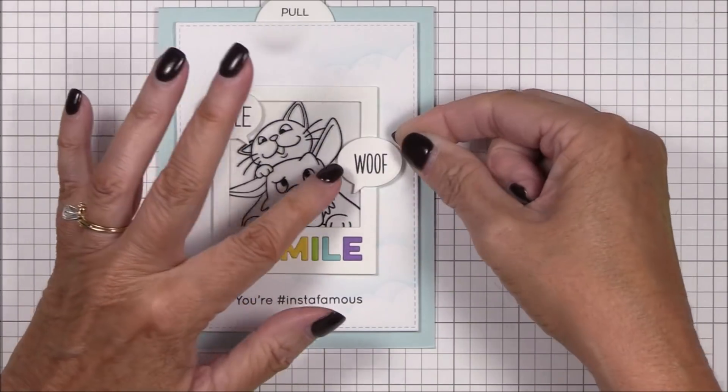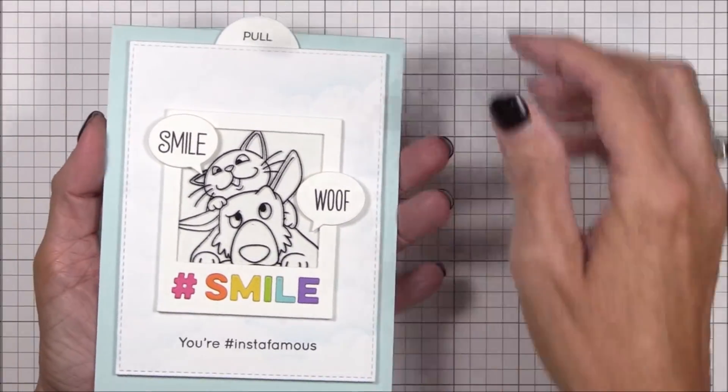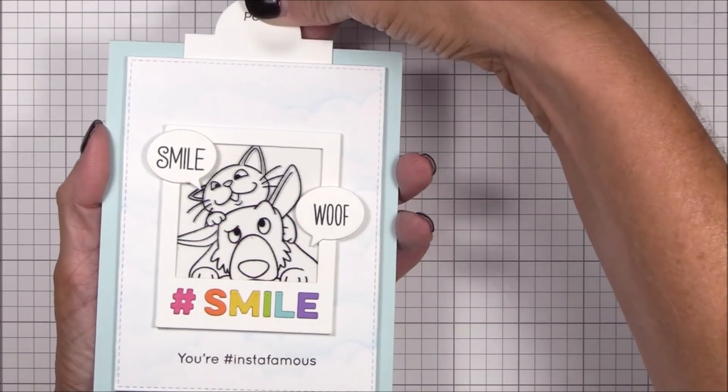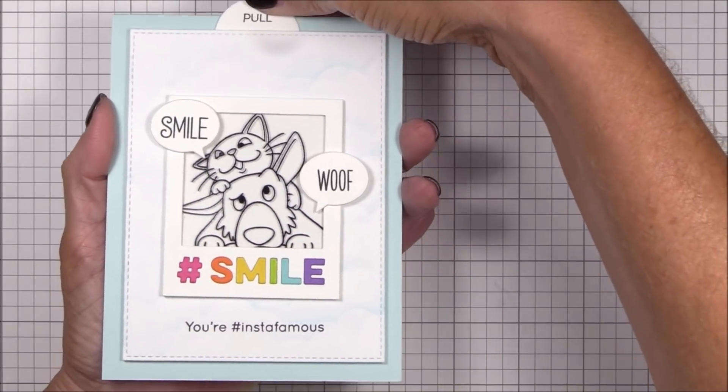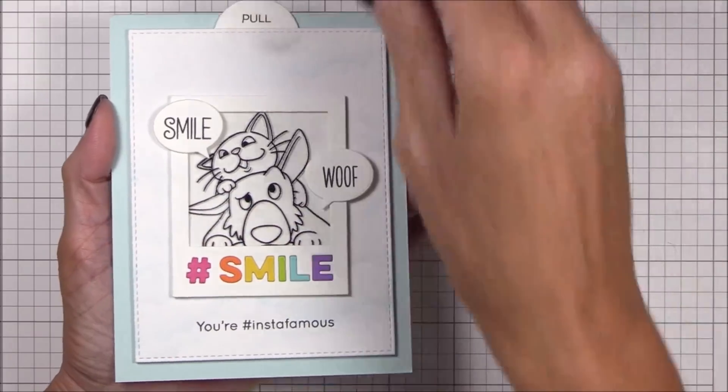And when I pull on that tab, the slider panel rises to reveal the fun colored image behind. Isn't this such a fun technique? And if I didn't have to do a bit of jimmy rigging to get it to work, it would have been super easy. But I'm just trying to keep it real, people. Even the most seasoned crafters make mistakes.